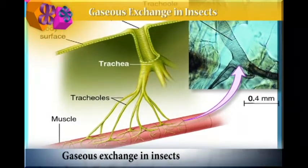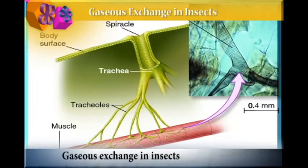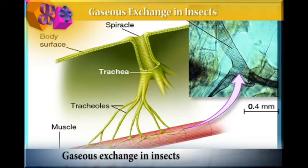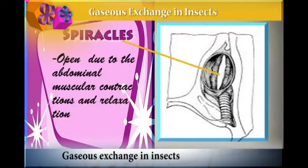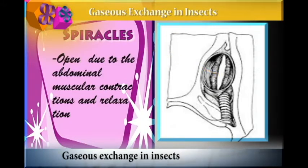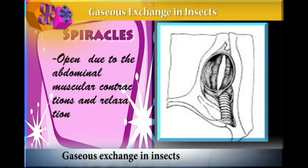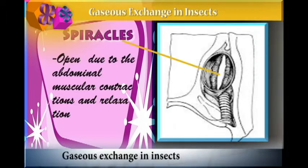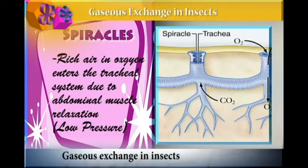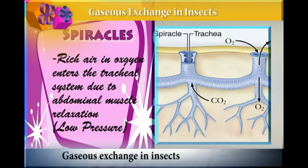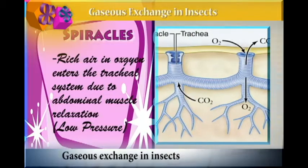This contraction and relaxation of the abdominal muscles leads to differences in pressure inside the tracheal system. The increase and decrease in pressure relative to the atmospheric pressure forces air to enter into the spiracle and also to move out of the spiracle.